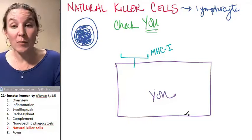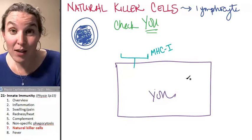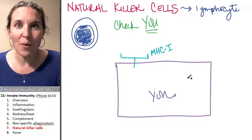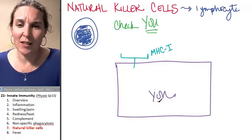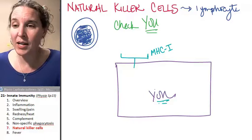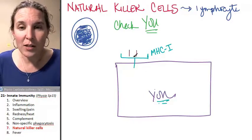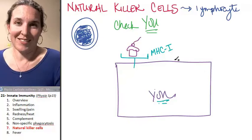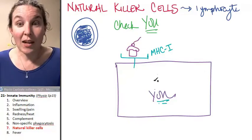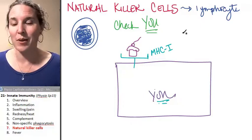MHC platforms are basically the place where your cells post status updates about what's going on inside them. So if this cell, this you cell, was like 'Dude, this is great. I just ate a chocolate cake,' it's going to post little pictures of chocolate cake. Look, I'm going to put a cherry on top of my chocolate cake. Little pieces of chocolate cake are going to be posted on the MHC platform.